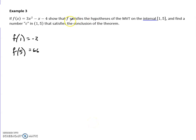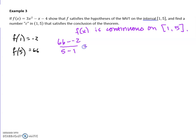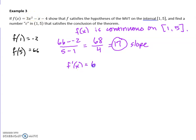Let's take a look at example 3 — same stuff. I want to show that it satisfies the hypothesis of the MVT. First, let's say that f(x) is continuous on the interval 1 to 5 — that's important. If it wasn't continuous, we couldn't say these things. Now I need to find the slope between the original values: y minus y over x minus x. I end up with 68 over 4, which is 17. So somewhere along the way from 1 to 5, there must be a C value where the slope is 17. To find the slope of the curve I do the derivative, which gives 6x minus 1. I'm looking for the C value, so I input C, set it equal to 17, and solve. It comes out very nicely.